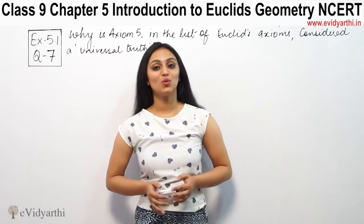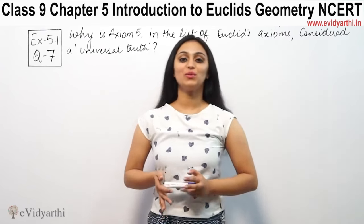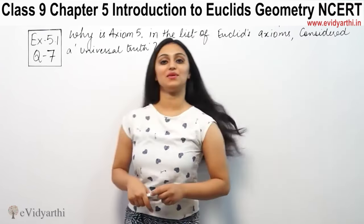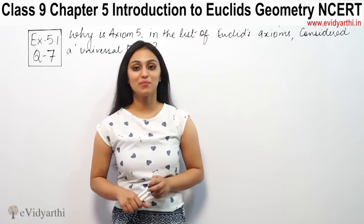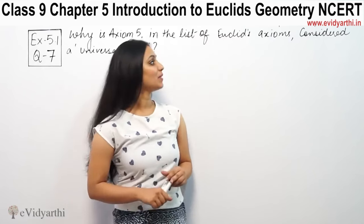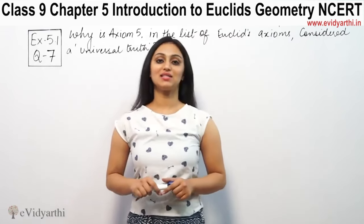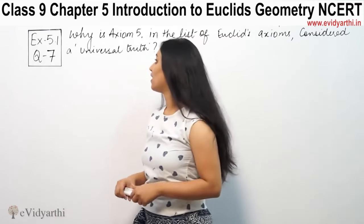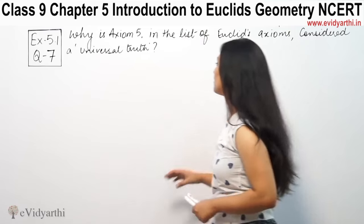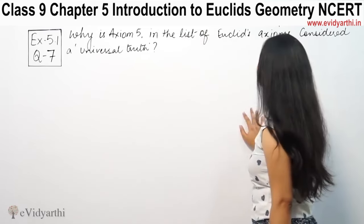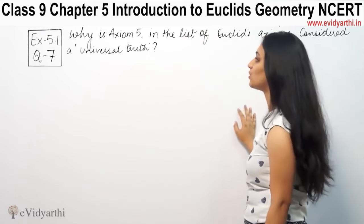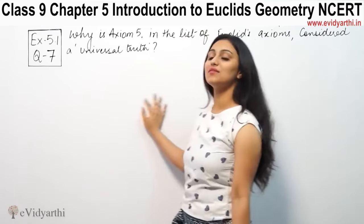Hi, this is Khushbu with another question on Euclid's Geometry. This is question number 7 from exercise 5.1, page number 86 from NCERT. The question says: why is Axiom 5 in the list of Euclid's Axioms considered a universal truth?